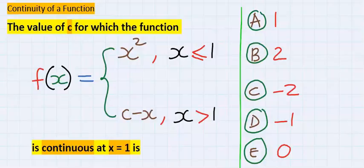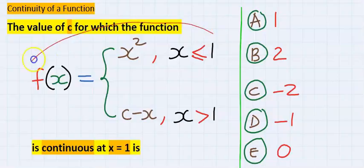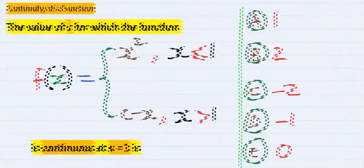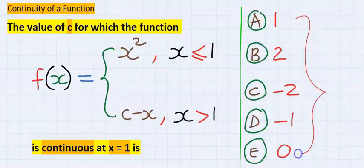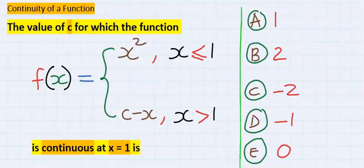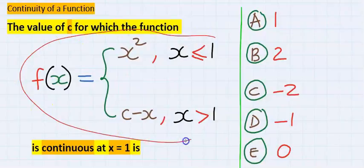By the end of this video you will be able to solve the continuity of this function. The value of c for which this function is continuous at x equal to 1 is... when we solve this we are going to choose one of these options. To solve this problem, let's look at the meaning of this function.